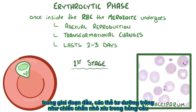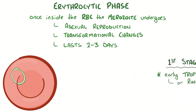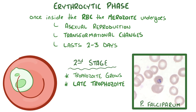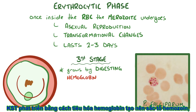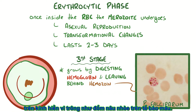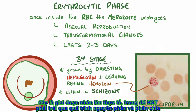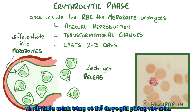In the first stage of the erythrocytic phase, the merozoite looks like a tiny ring within the red blood cell and is called an early trophozoite or ring form. In the second stage, the ring-formed trophozoite grows and is referred to as a late trophozoite. In the third and final stage, the parasite grows more by digesting hemoglobin and leaves behind hemozoin, which under a microscope looks a little like a brown feces smudge on a red blood cell. At this point, the parasite is called a schizont — the actual replicative phase, in which the parasite undergoes mitosis and differentiates into lots of merozoites, which can get released into the blood.